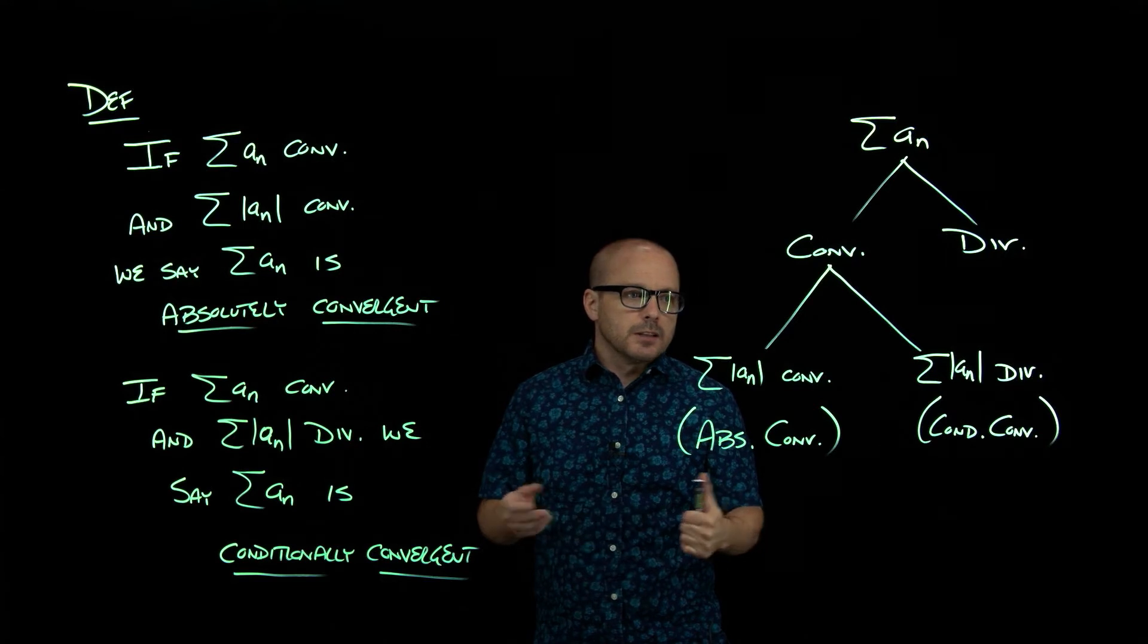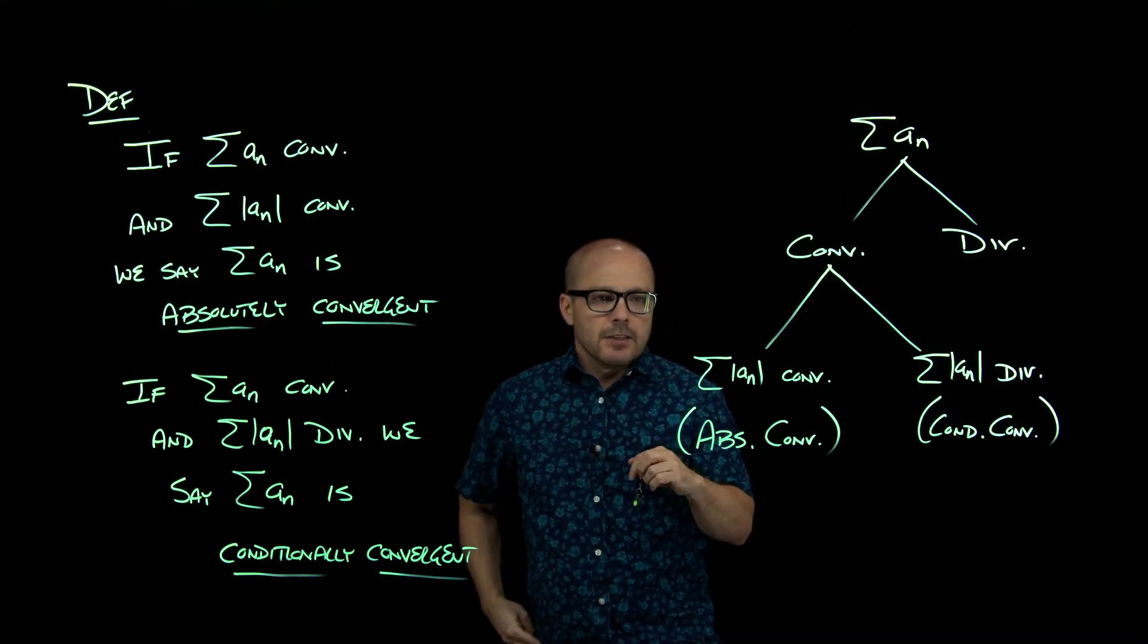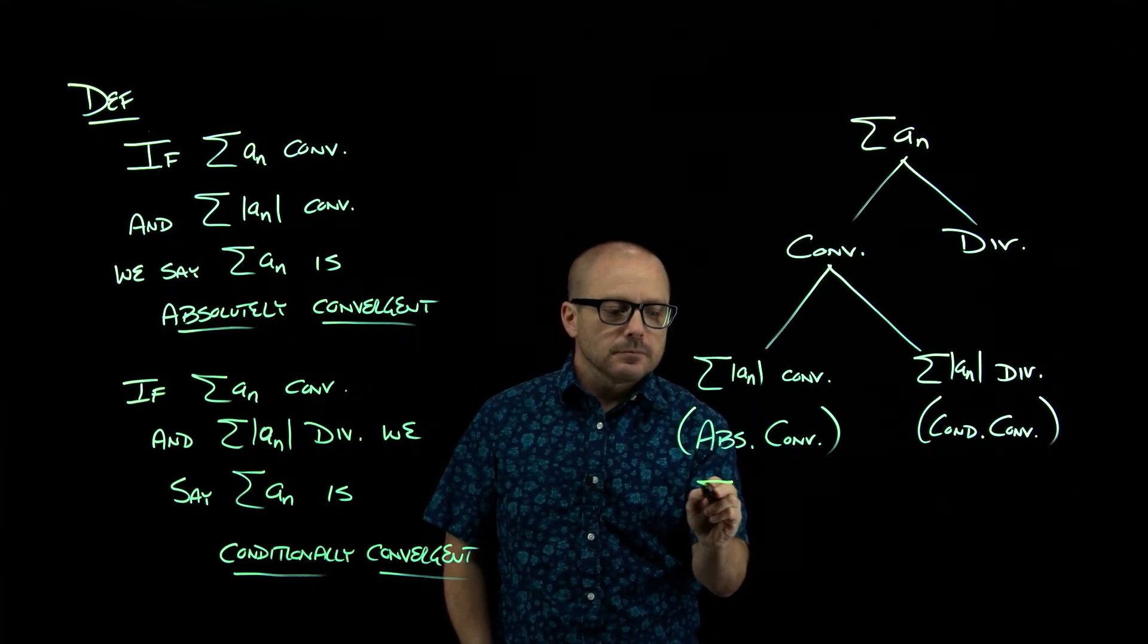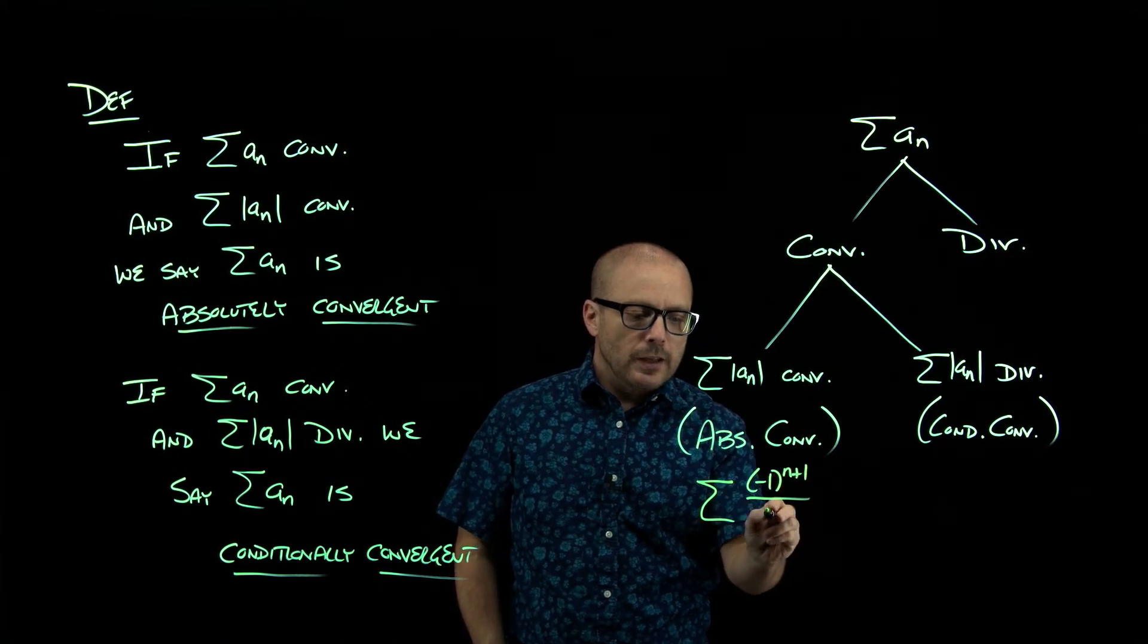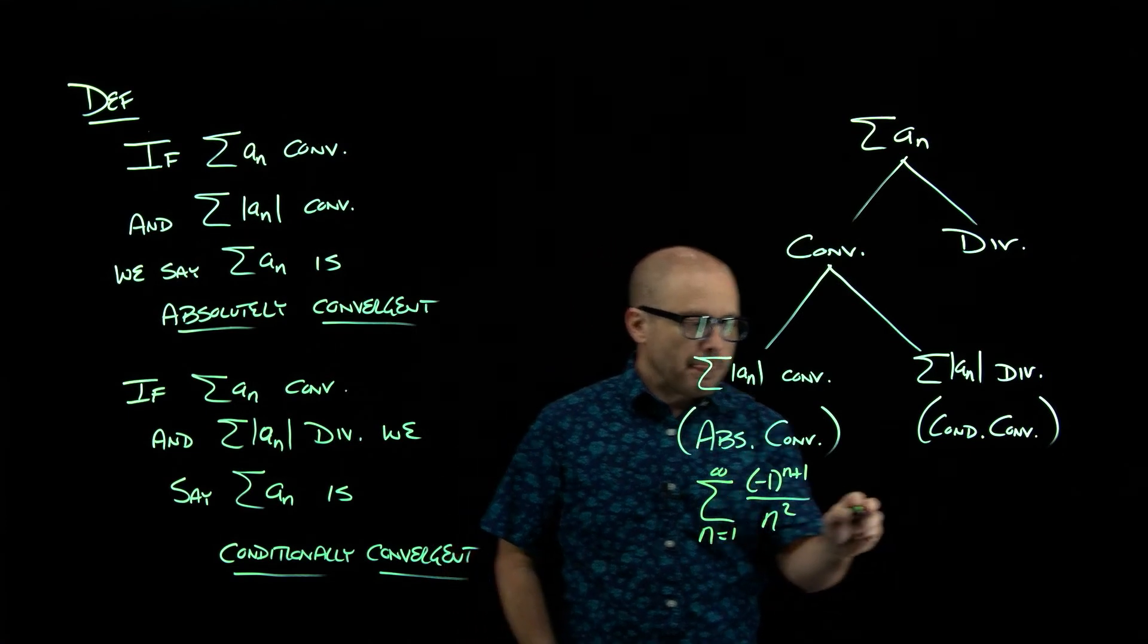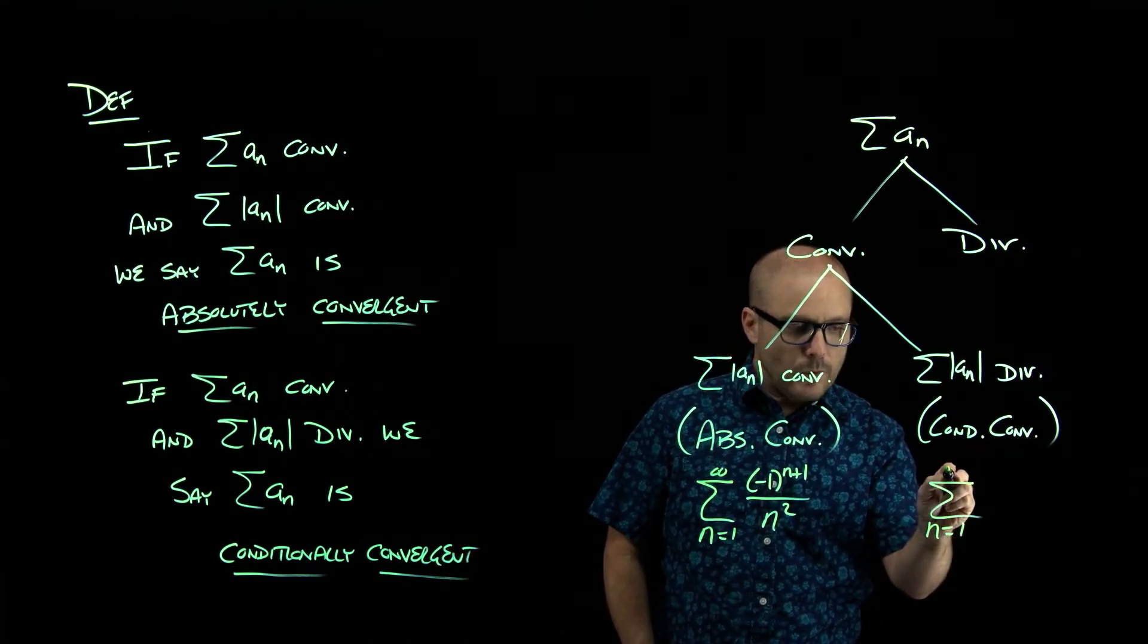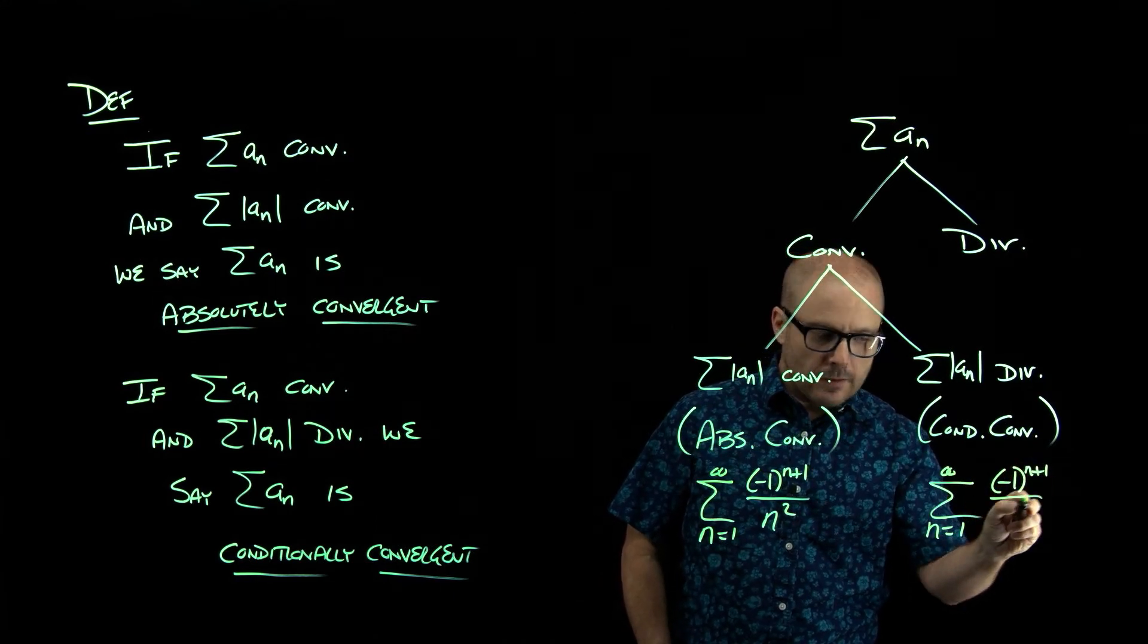And we could look at a very simple example. Think about the difference between something like negative one to the n plus one over n squared from one to infinity and n from one to infinity of negative one to the n plus one over n.